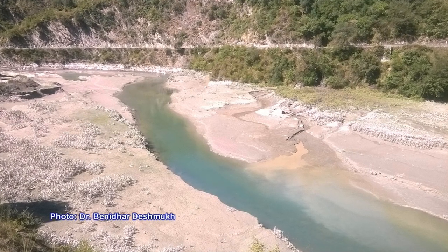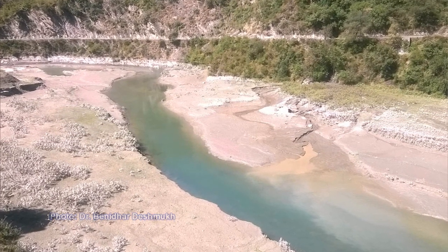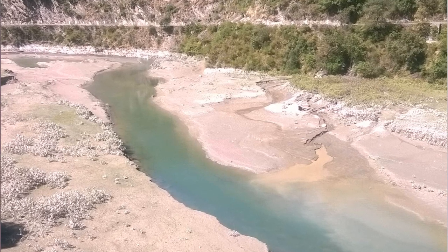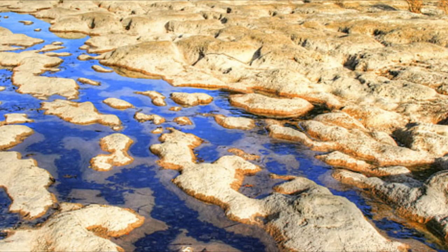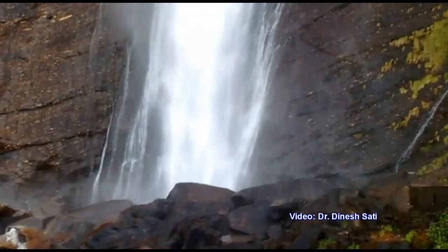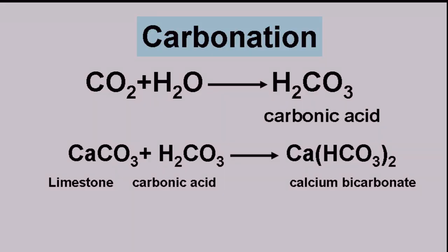Water is the most important agent for weathering because it is present everywhere and has a high dielectric constant — it can dissolve most minerals. Rocks that are dissolved in water easily are said to be soluble. For example, limestone rocks are easily soluble. When water falls through the atmosphere it combines with carbon dioxide to form carbonic acid, which increases the acidity of the water and causes rocks to weather.